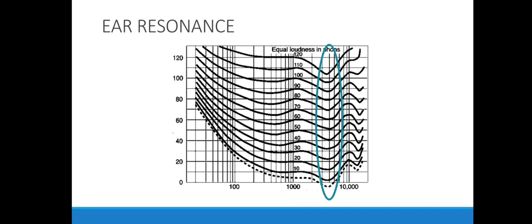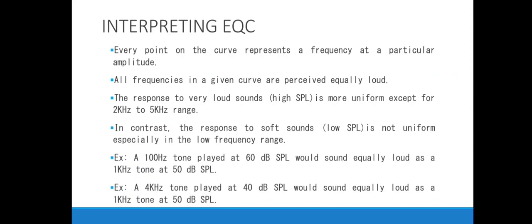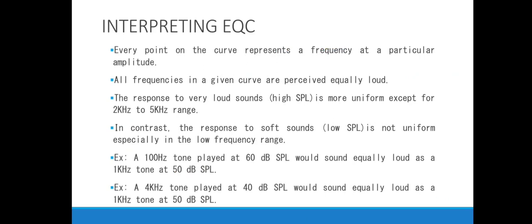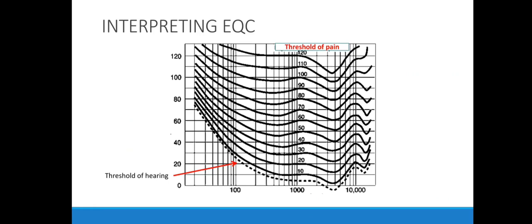How do we interpret the equal loudness contour? Every point on a curve represents a frequency at a particular amplitude. The x-axis is frequency in logarithmic scale, and the y-axis is sound pressure level. All frequencies on a given curve are perceived equally loud. If you pick any curve and trace it to 1 kHz, you get the loudness level for that curve — and that loudness level is the same no matter where you are on that particular curve.